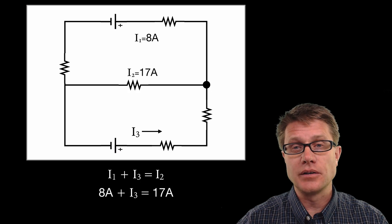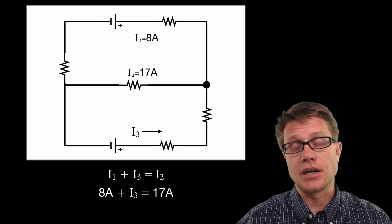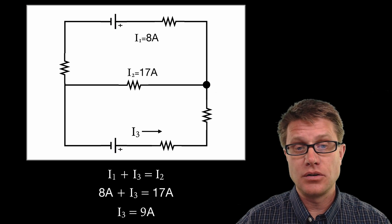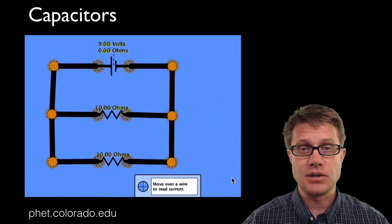Now lots of times you can also use Kirchhoff's loop rule in concert with this to solve more complex problems. But I should get an I2 value, or rather an I3 value of 9 amps.